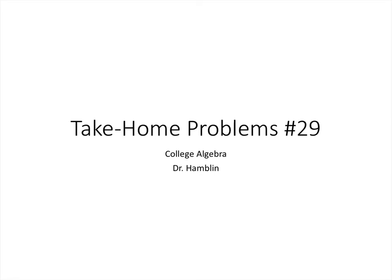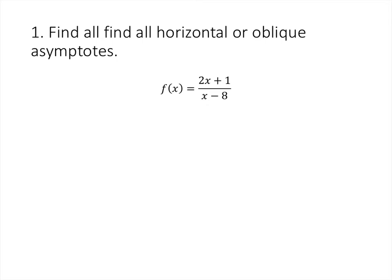This video contains the solutions to take-home problems number 29. For each of these we're looking for horizontal or oblique asymptotes, and the process is to take the rational function and divide top and bottom by the highest power of x that we see in the bottom of the fraction.